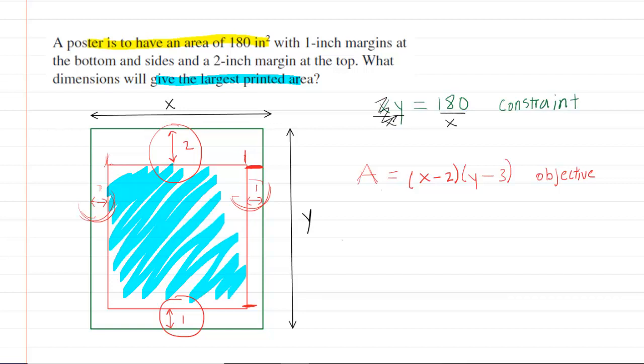These X's would cancel here and we could see that Y is equal to 180 divided by X. Now after solving the constraint for Y, you're going to want to plug it in to your objective right there where you see that Y.